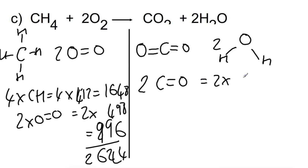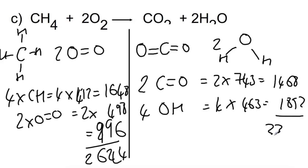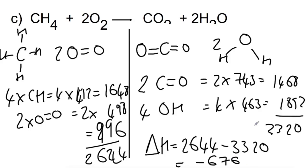So that's 2 times 743. And we're making four O-H bonds. So that's 4 times 463. So that gives a total of 3320. Delta H is the breaking side, 2644 minus the making side to give you an enthalpy change of negative 676 kilojoules per mole.